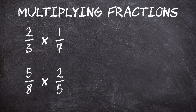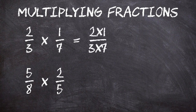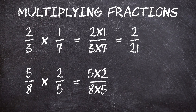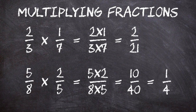How about multiplying fractions? Multiplying fractions is fairly straightforward — you don't even have to have the same denominator. All you have to do is multiply the top by the top and the bottom by the bottom. So for two-thirds times one-seventh, we multiply the numerators together, two times one, and the denominators together, three times seven, to get two over twenty-one. We can't simplify that any further, so that's our final answer. For the second problem, five-eighths times two-fifths, we multiply five by two and eight by five to get ten over forty. We can simplify that by dividing both top and bottom by ten to get one over four. So five-eighths times two-fifths equals one-quarter.